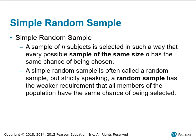A simple random sample: a sample of N subjects is selected in such a way that every possible sample of the same size N has the same chance of being chosen. A simple random sample is often called a random sample, but strictly speaking, a random sample has the weaker requirement that all members of the population have the same chance of being selected — not that all samples of the same size N have the same chance of being selected, as in a simple random sample.